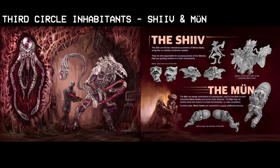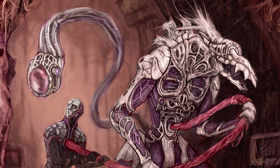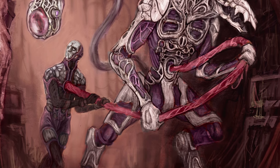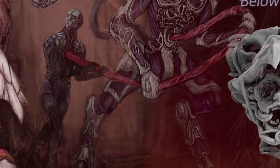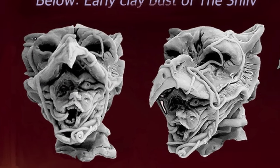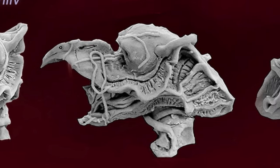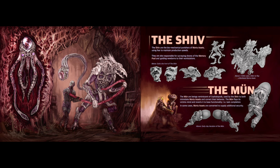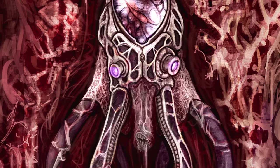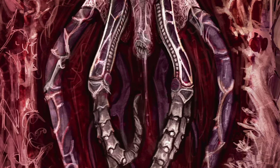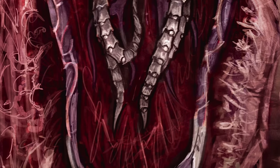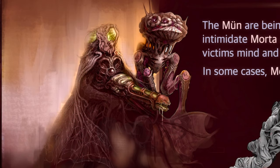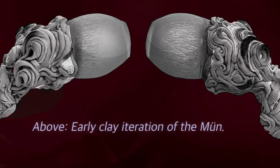The Shiv are the biomechanical punishers of Morda assets, using fear to maintain production speeds. They are also responsible for surveying the shores of the memory pool and guiding newborns to their workstations. Here you can see some clay busts I made of the Shiv. Originally I had this idea where they could replicate the faces of those they'd killed in their mouths, but that ability was given to a different creature in my world which I haven't yet talked about. The Moon are beings reminiscent of cephalopods, used by the Shiv to intimidate Morda assets and correct their behavior. The Moon flays its victim's mind and reverts it to base functionality, like task completion. In some cases, Morda assets are converted to supply additional security. I also have some early clay busts of the Moon you can check out.